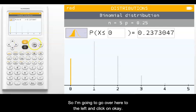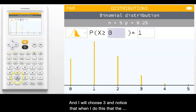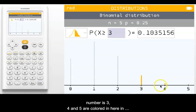So I'm going to go over here to the left and click on OK. And I'm going to choose greater than and I will choose three. And notice that when I do this that the numbers three, four and five are colored in here in yellow.